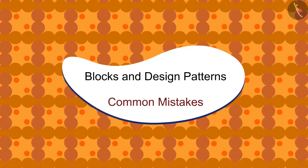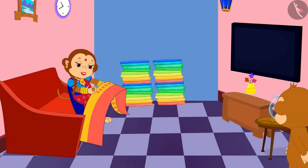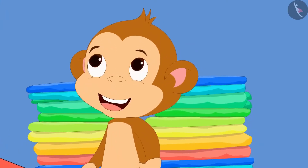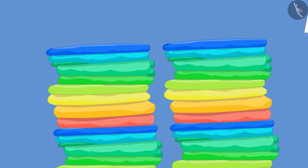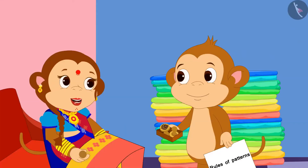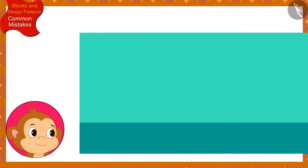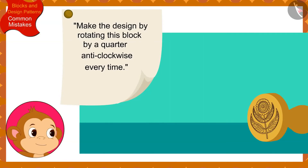In this video, we will see some common mistakes related to this. Banno's sarees shop is going very well. Every day, seeing Banno making designs on so many sarees, Babban thought, why not give Banno a little help? Bappanji, I will write the rules of the pattern you need to make on the sarees on a piece of paper for you. You only need to use these blocks and make the designs according to that rule. Banno told Babban. Babban has to make the design using this block according to this rule on the first saree: make the design by rotating this block by a quarter anti-clockwise every time. Babban read the instructions written by Banno.